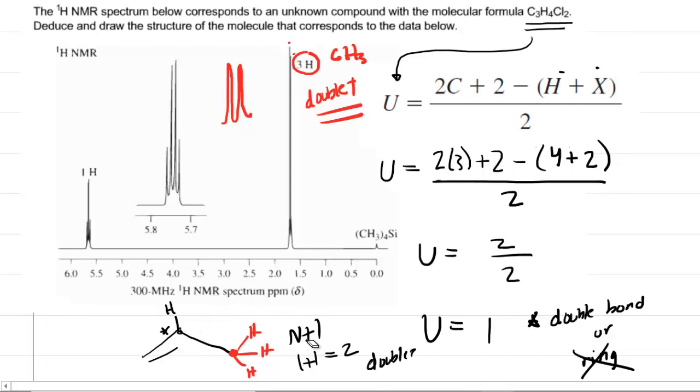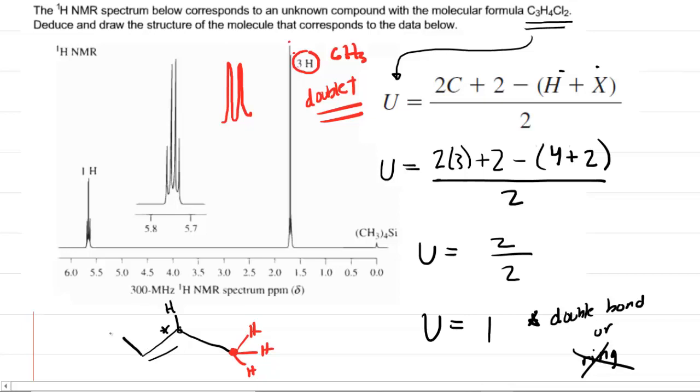We have a very plausible structure going on, but we still have to put in two chlorines. Well, that's going to be very easy. The only other positions that we could put those two chlorines would be at this first carbon.